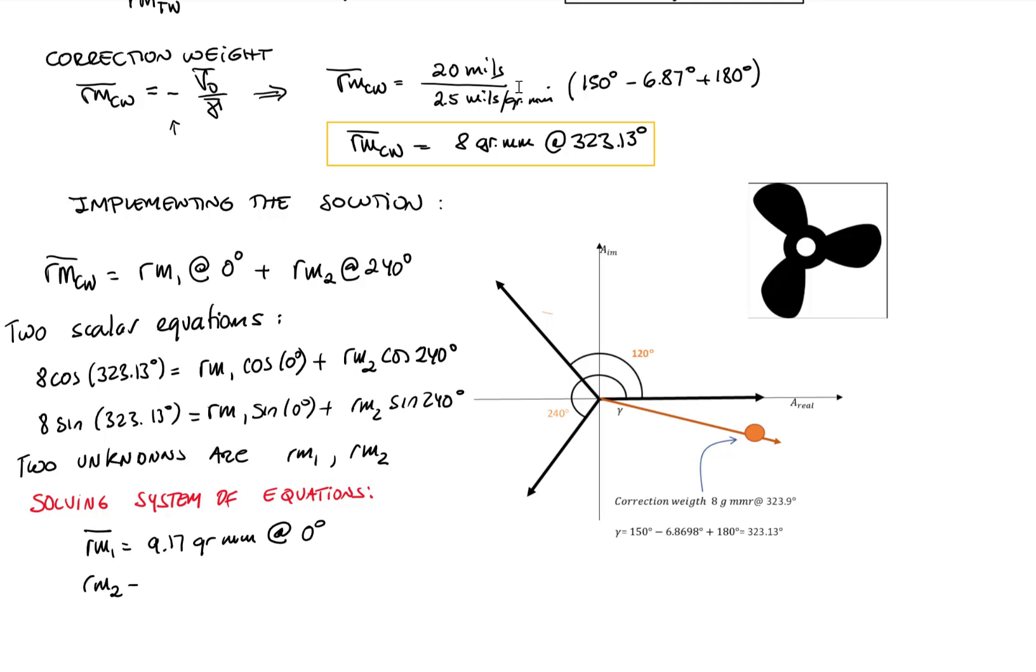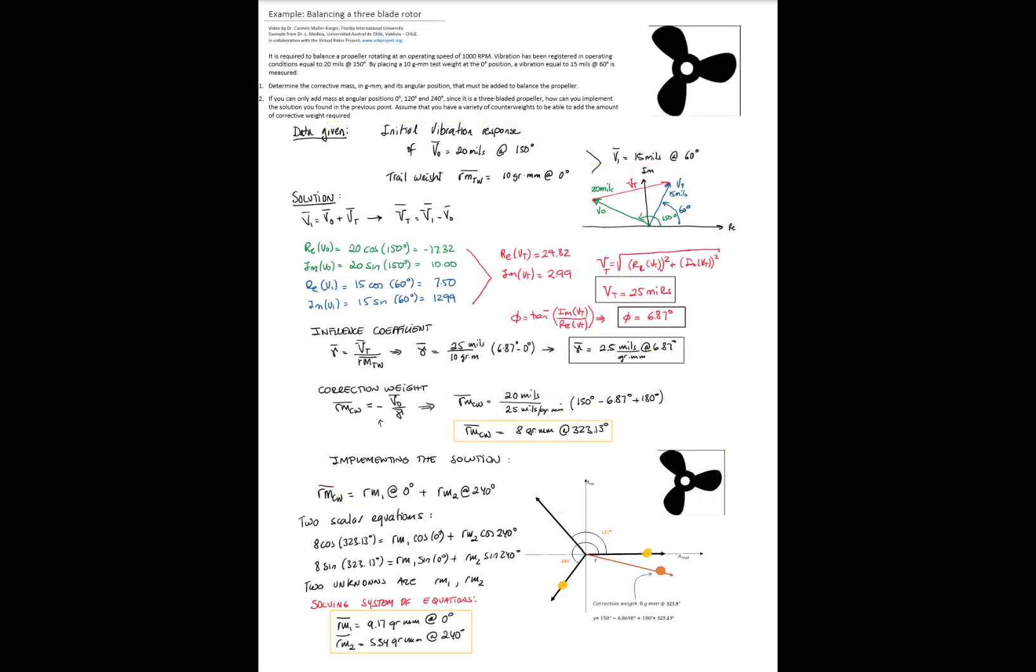we get that the first mass is 9.17 gram millimeters at 0 degrees. Therefore, we can write this as a vector, and the second mass will be equal to 5.54 gram millimeters at 240 degrees. That is equivalent to installing a mass at 0 and a mass at 240 degrees, and this represents the total solution of our example.